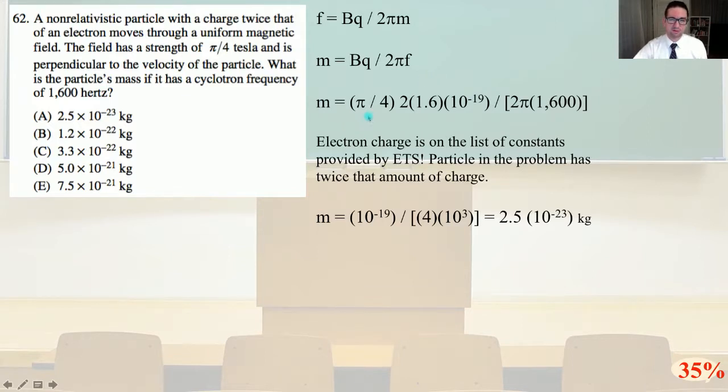So m equals (π/4)(2)(1.6×10⁻¹⁹) divided by 2π(1600). And the electron charge is on the list of constants provided by the ETS. And the particle in this problem has twice that amount of charge. So m is going to equal 10⁻¹⁹ divided by (4×10³). And that equals 2.5×10⁻²³ kilograms. And that is answer A.